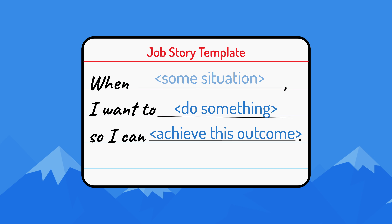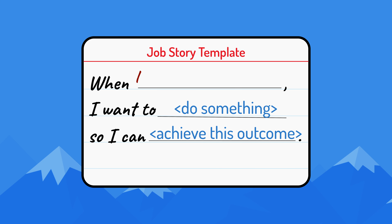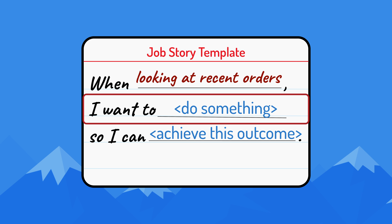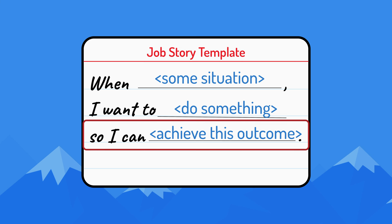Examples of triggers could be: when an order is submitted, when searching by postal code, when no matches are found, or when looking at recent orders. The second element of the job story template follows the 'I want to' and provides the motivation for the story — think of the motivation as a user's stated or first-order goal. The third part of a job story is the expected outcome; think of this as the user's ultimate goal.